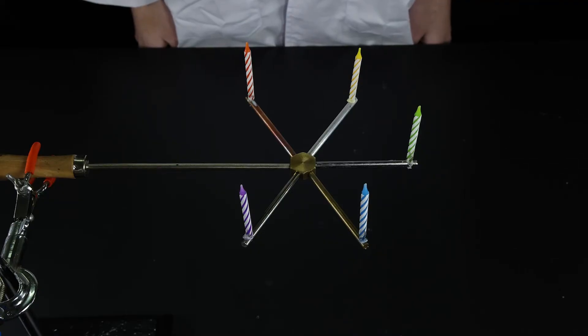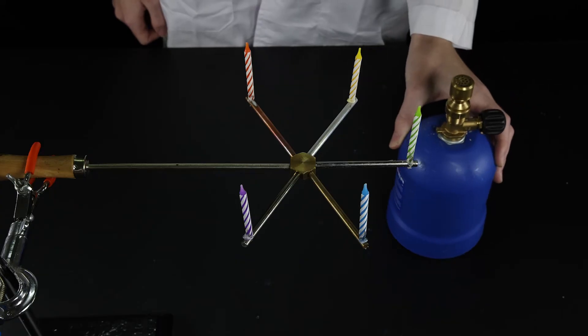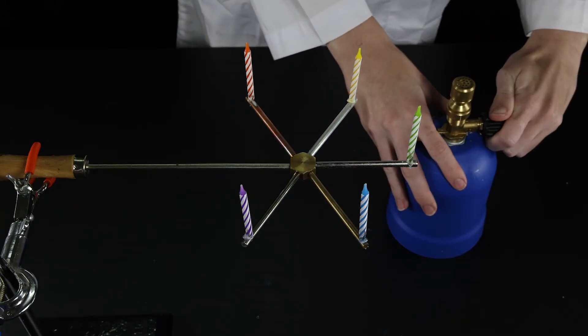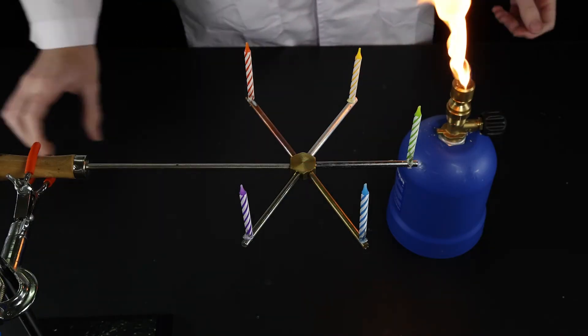At the tip of each metal rod is a candle held in place with wax. How will heat move when the center of the device is heated with a burner? Which type of metal will be the best conductor of heat?